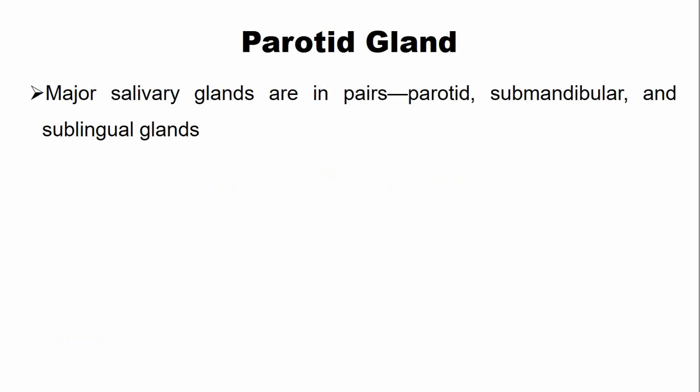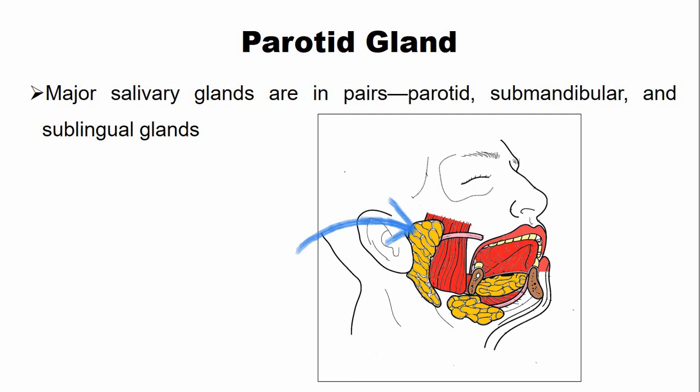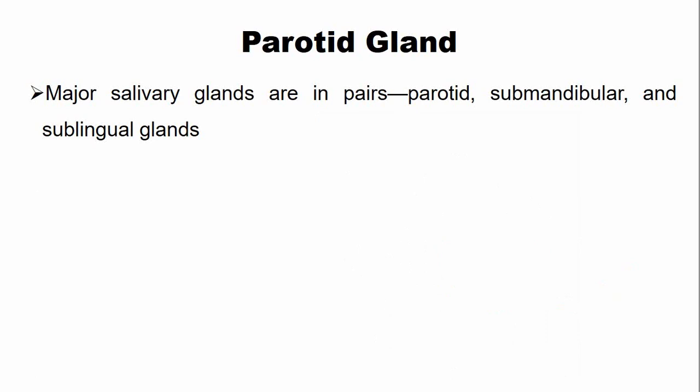Hello everyone, welcome to Dental Education Hub YouTube channel. Today we are going to study the gross and applied anatomy of the parotid gland. Major salivary glands are in pairs and the names of the glands are parotid, submandibular, and sublingual glands. Today we are going to study about the parotid gland only.